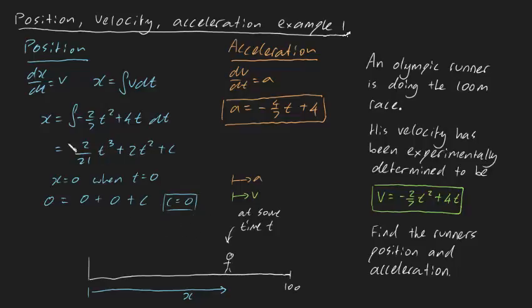And so when you plug this back into here, we can say that our equation for position is minus two on twenty-one t cubed plus two t squared. And we are done. We have our equations for position, velocity, and acceleration.